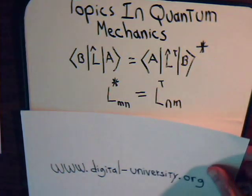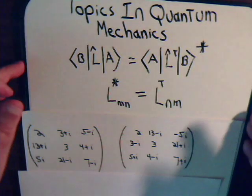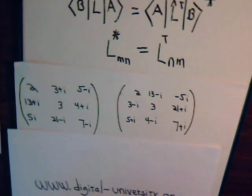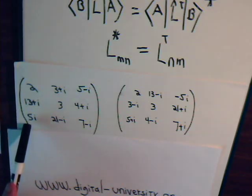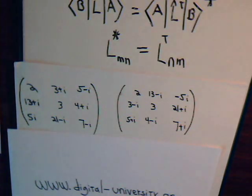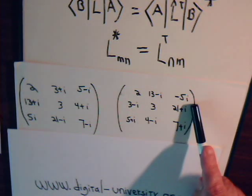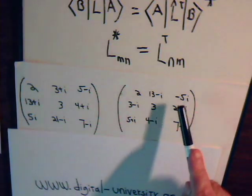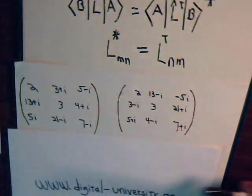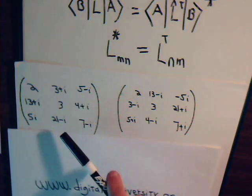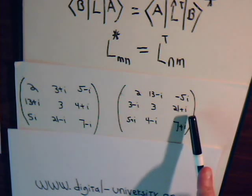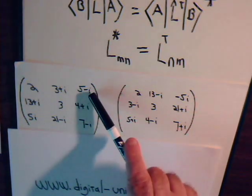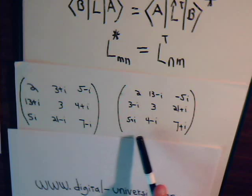For example, if L was this matrix here, we would go down the first column, take the complex conjugate of those numbers — 13 minus i, minus 5i — and that would be the first row in the adjoint. Same thing for the second column: take the complex conjugates, 3 minus i, 21 plus i, and that column becomes the second row. Likewise for the third column: take the complex conjugates and that becomes the third row.